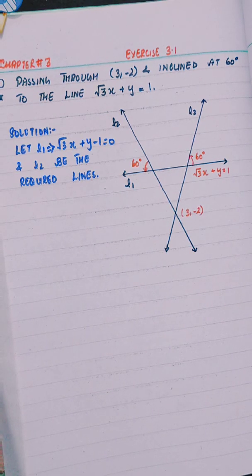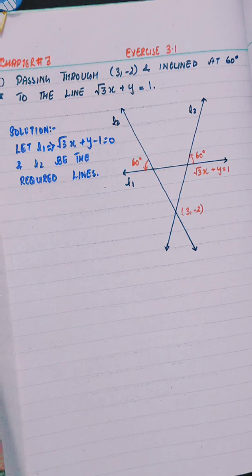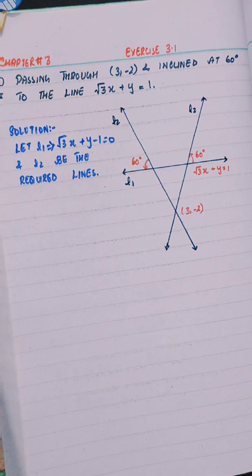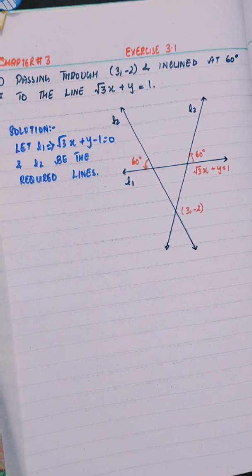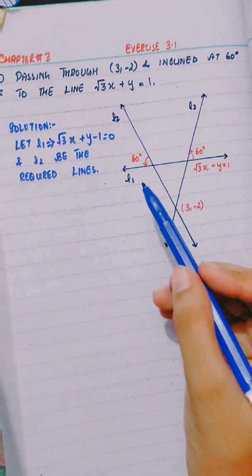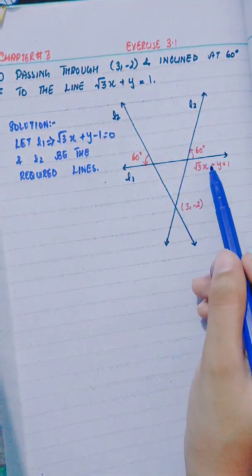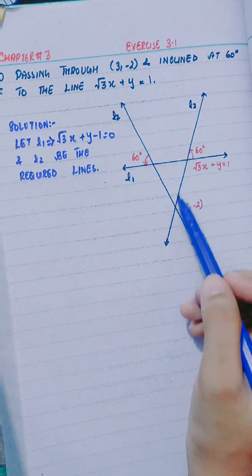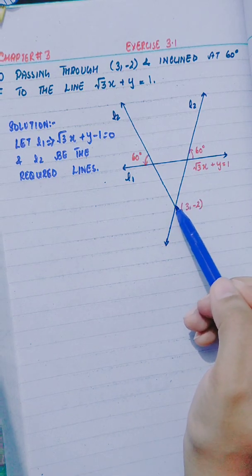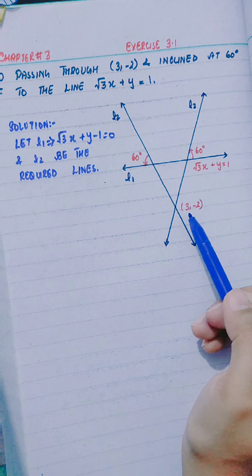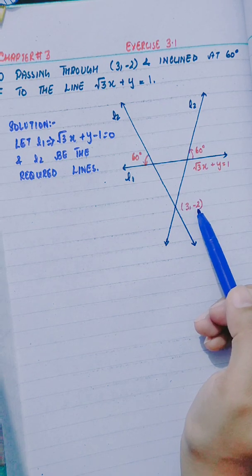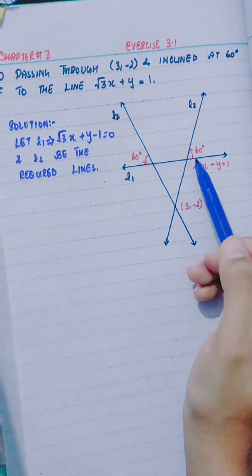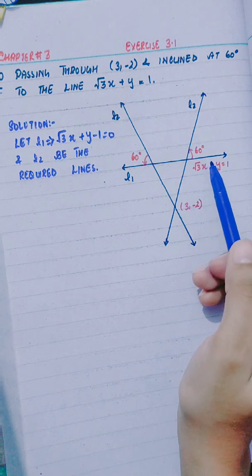Let L1 = √3x + y - 1 = 0 and L2 be the required line. L1 has the given equation and L2 passes through the point (3, -2), and these lines are making an angle of 60 degrees.